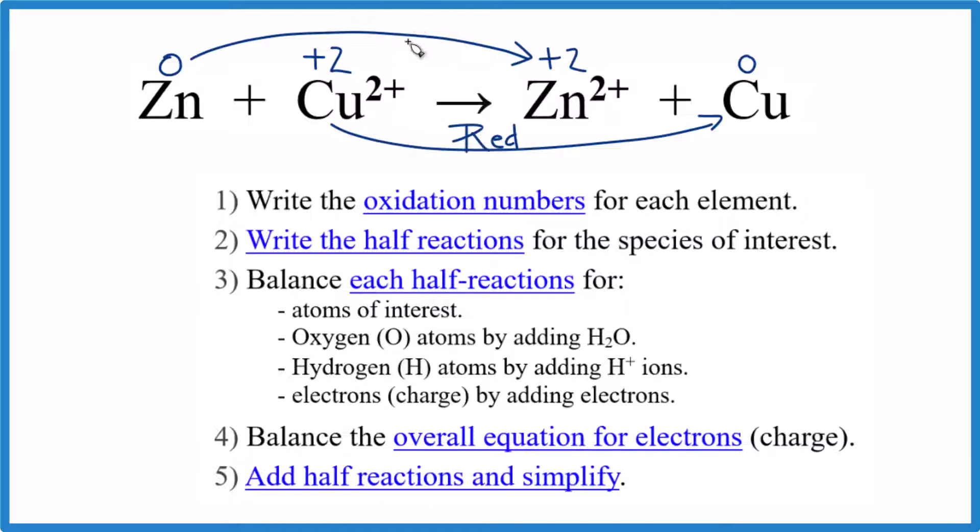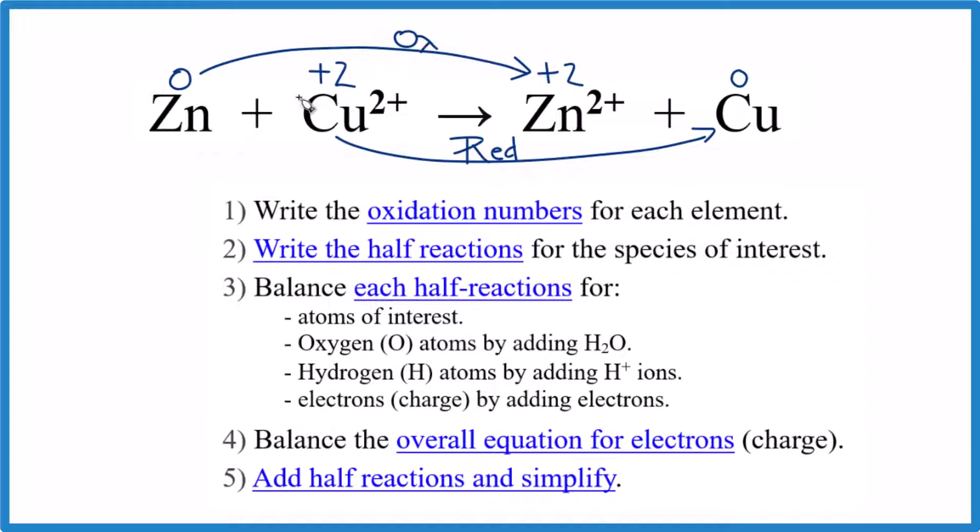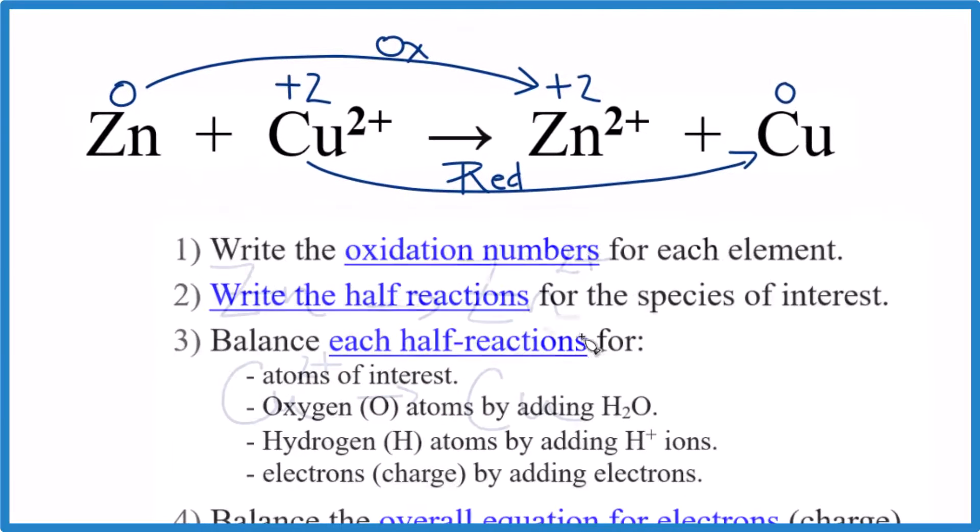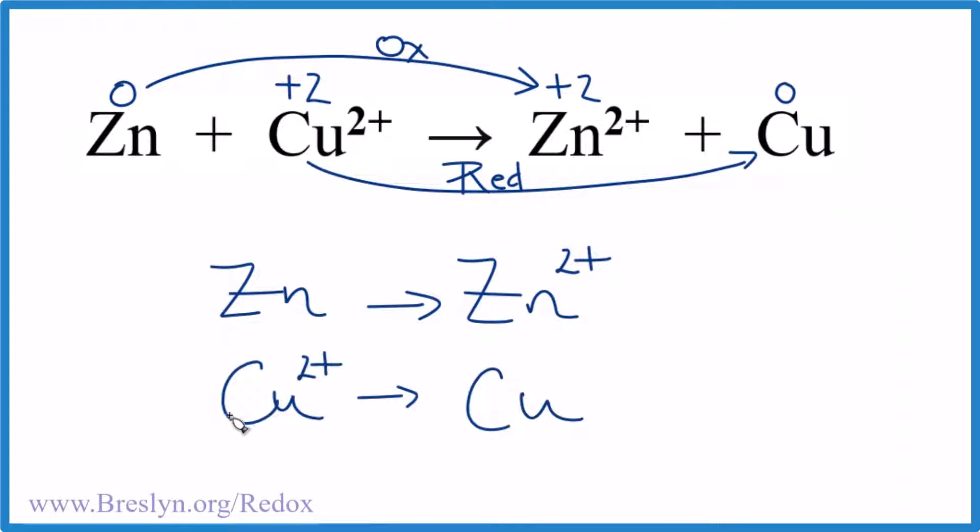That means up here we've been oxidized. We went from zero to plus two, got bigger. So this is our oxidation half reaction. Let's write those out. We have oxidation and reduction. Now we need to balance these.